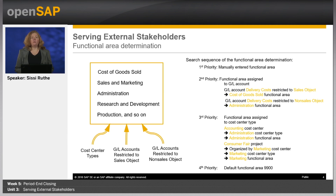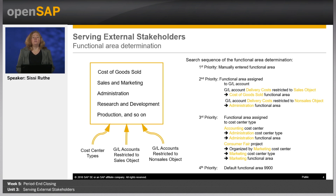There are other scenarios possible, like a consumer fare project which is organized by the cost center marketing. In this case, the assigned cost center type is also marketing and this leads to the functional area marketing. If you do not specify a functional area and the system cannot derive one, it uses the default functional area 9900.